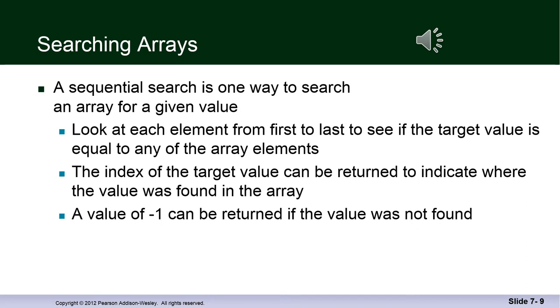It's very common to have to search an array to find a specific value. And probably the most common search is a sequential search, which means you look at each element from first to last to see if the target value is equal to any of the array elements. The index of the target value could be returned to indicate where the value was found in the array or a value of minus one could be returned if the value was not found.